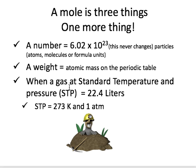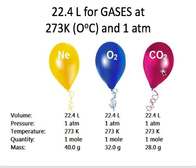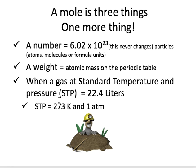The third thing: a mole of gas at standard temperature and pressure — STP — is 22.4 liters. Please write down that standard temperature is 273 Kelvin and standard pressure is one atmosphere. Gases are affected by temperature and pressure, so we have to specify conditions. For example, neon, oxygen, and carbon dioxide held in a balloon at 273 Kelvin and one atmosphere will all have a volume of 22.4 liters, even though their masses are different, because gases are so diffuse.